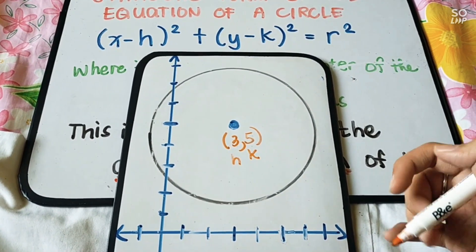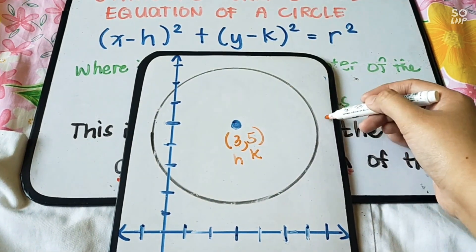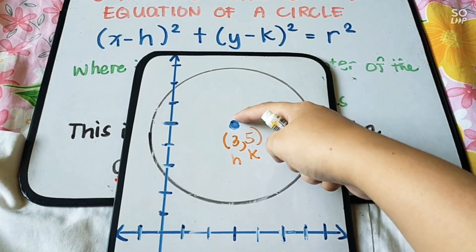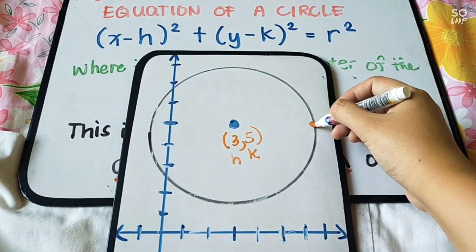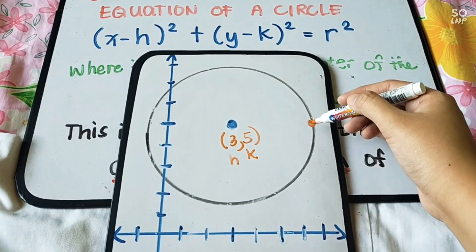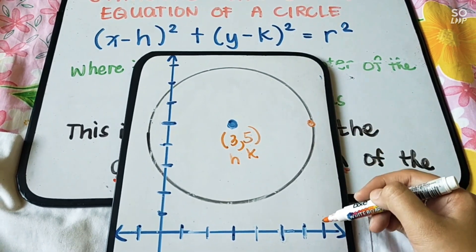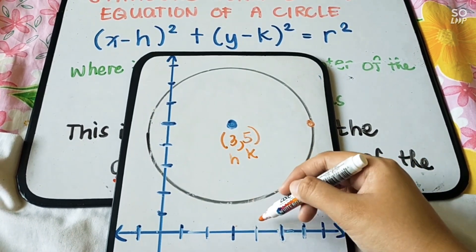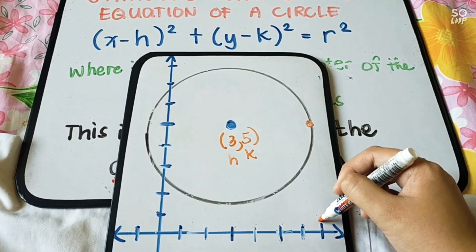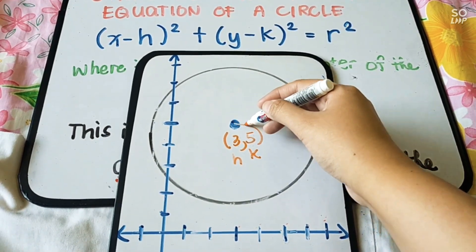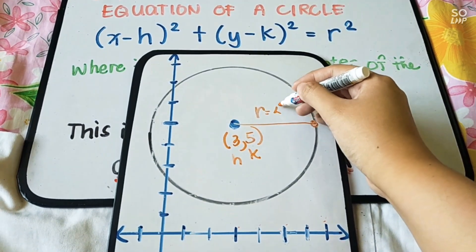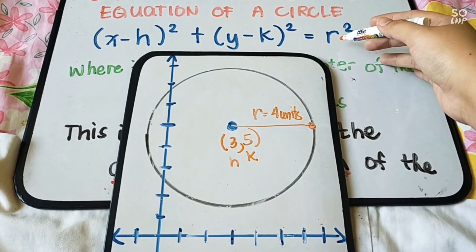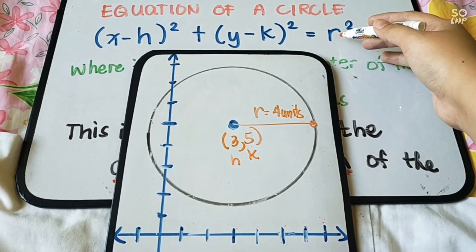Next, what is the radius? From the center to any point of the circle, that is the radius. Let us count from the center to the edge of the circle: 1, 2, 3, 4. So the radius is 4 units. So R equals 4, and you will substitute 4 for R in the standard form.